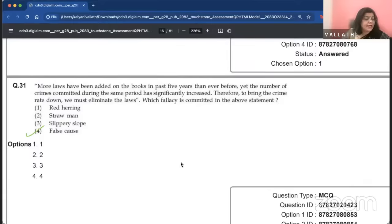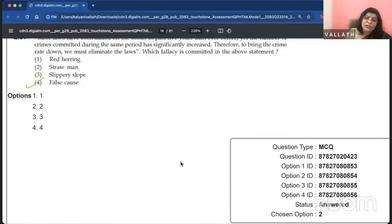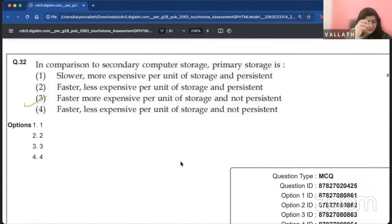And right now, if you have maybe 89 questions right, it is possible that when you contest some questions that are wrong, you can get two or four marks. So, 88, 89% in general category, must be safe. And then OBC is proportionately, maybe four or five questions less. More laws have been added in past five years than ever before. Yet, the number of crimes committed during the same period has significantly increased. What fails to bring the crime down, we must eliminate the laws. That's a very famous example of a fallacy. False cause is the fallacy.